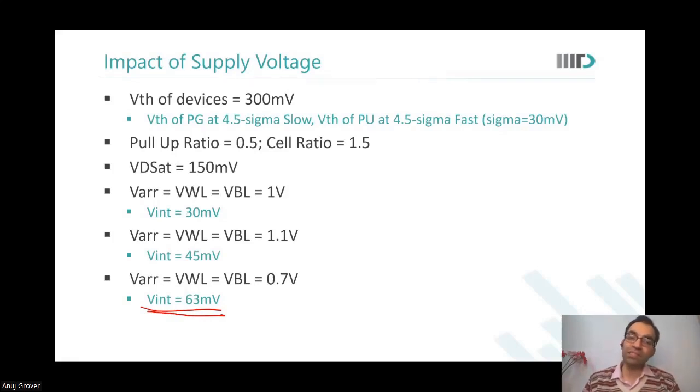So I'm in saturation region. Pull-up is still in saturation region. Pass gate is in linear region. As you reduce the supply voltage, pass gate goes into still more resistive mode. Pull-up is still operating in saturation. So my VInt actually increases.